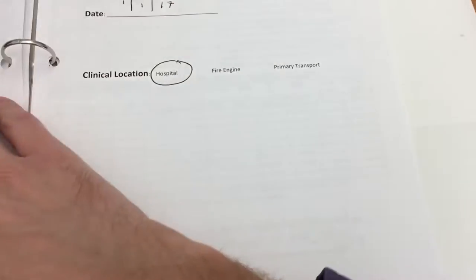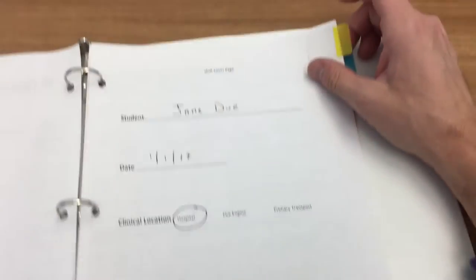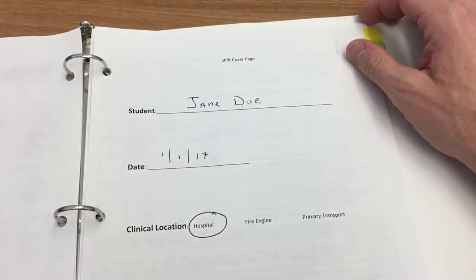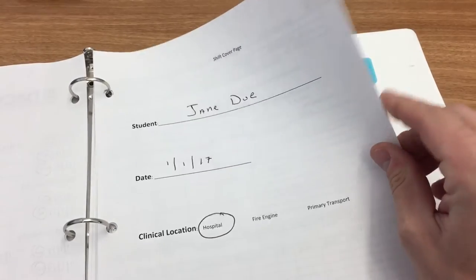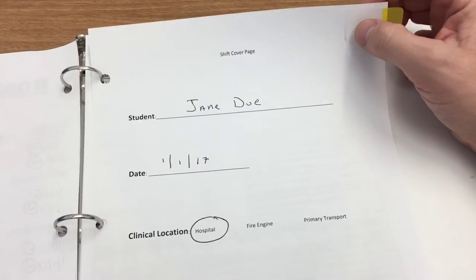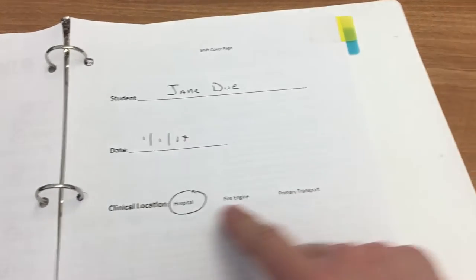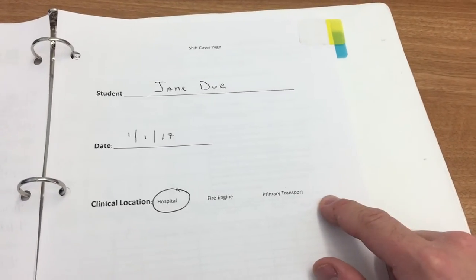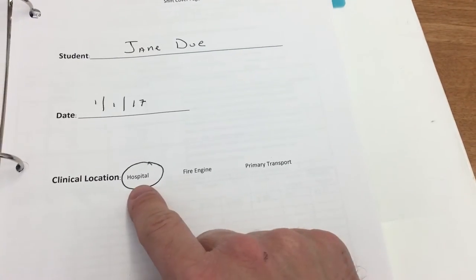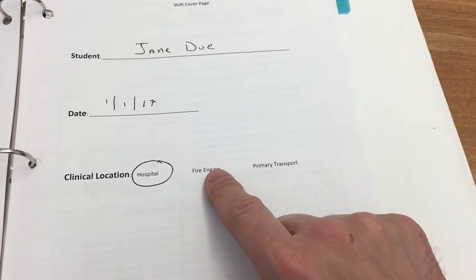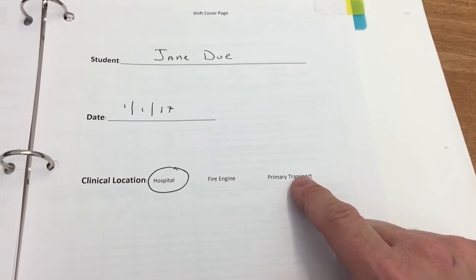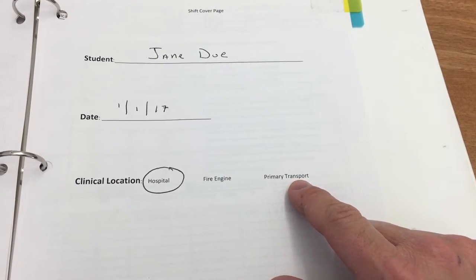So this will be the second sheet here, the skill checkoff sheet. And then just like lab, every day that you rotate should have its own cover page. So this is your shift cover page. You'll put your name, the date of that shift, and then you will circle the clinical location.